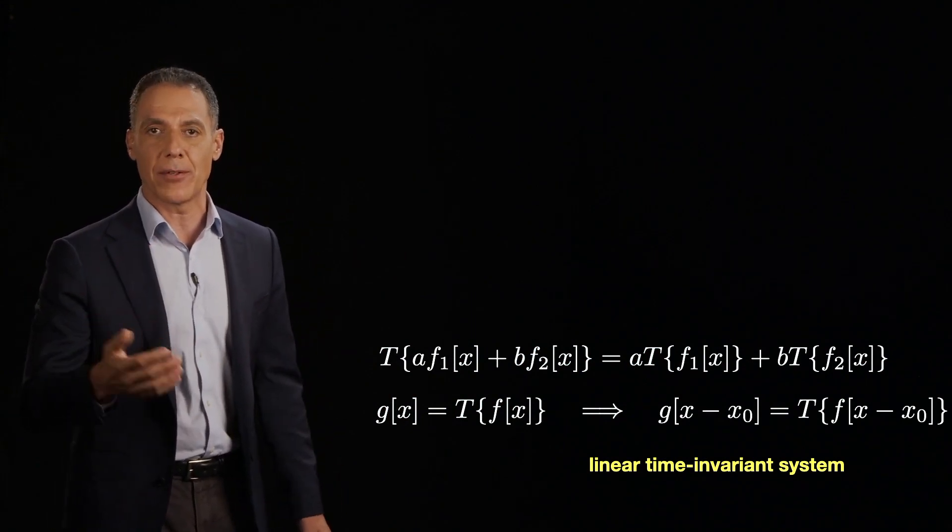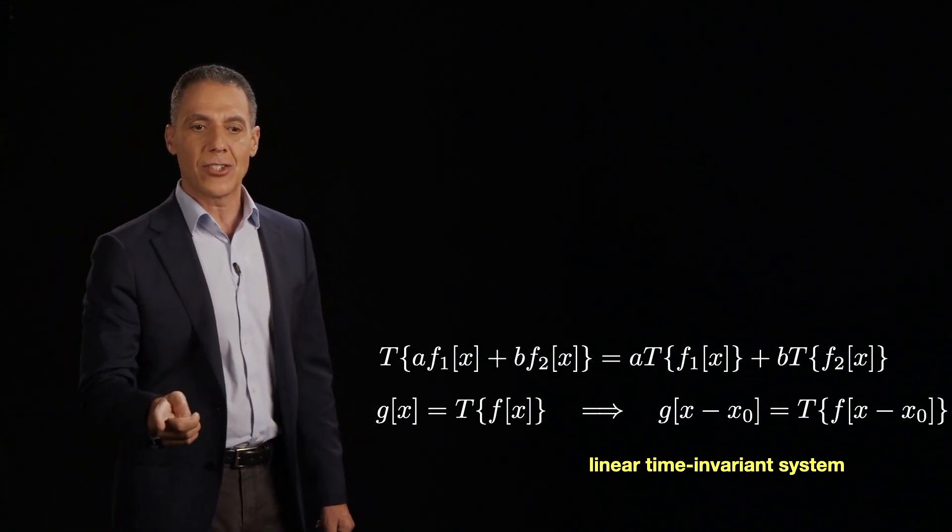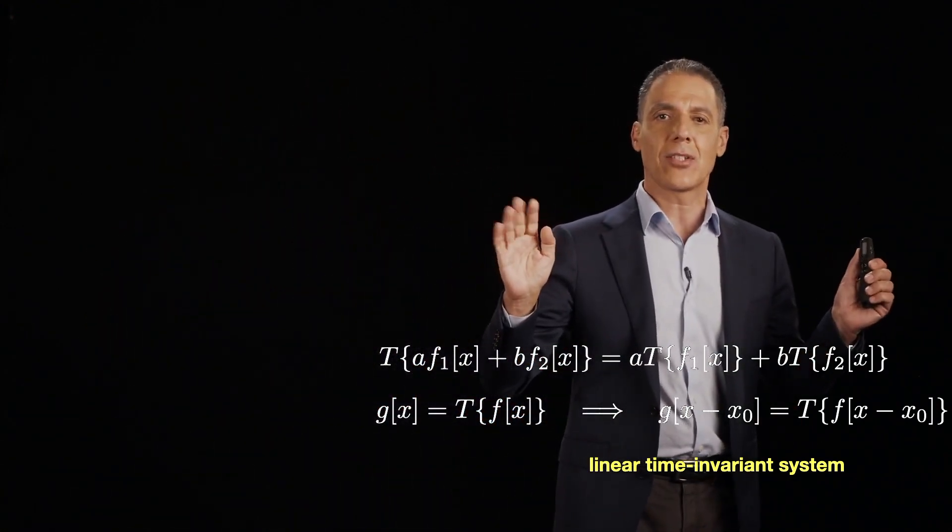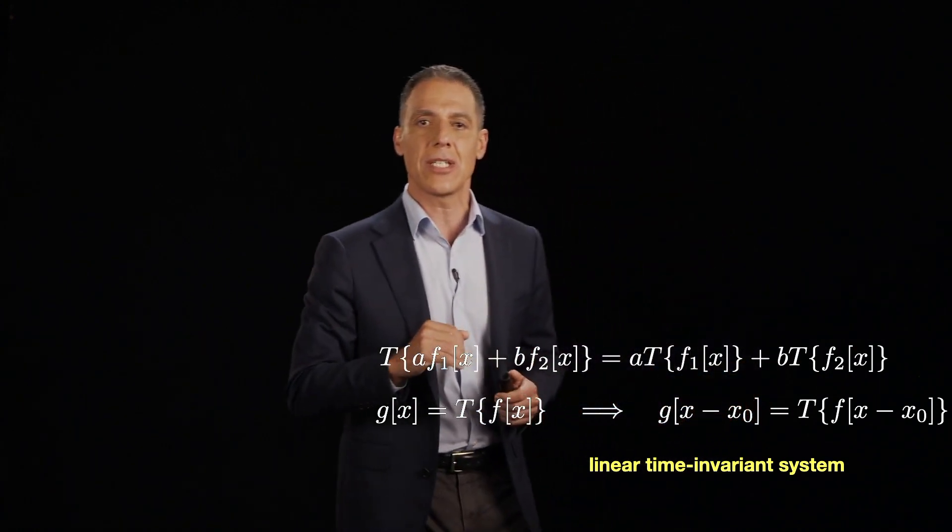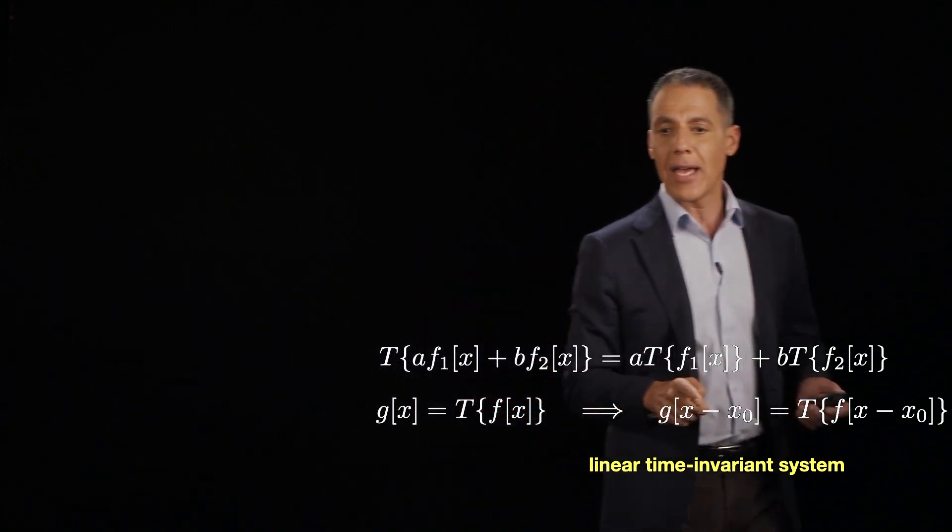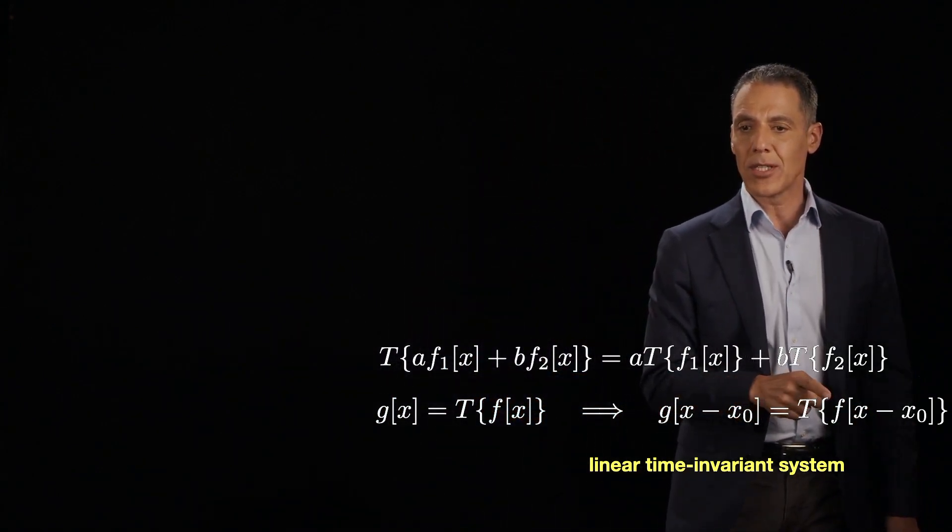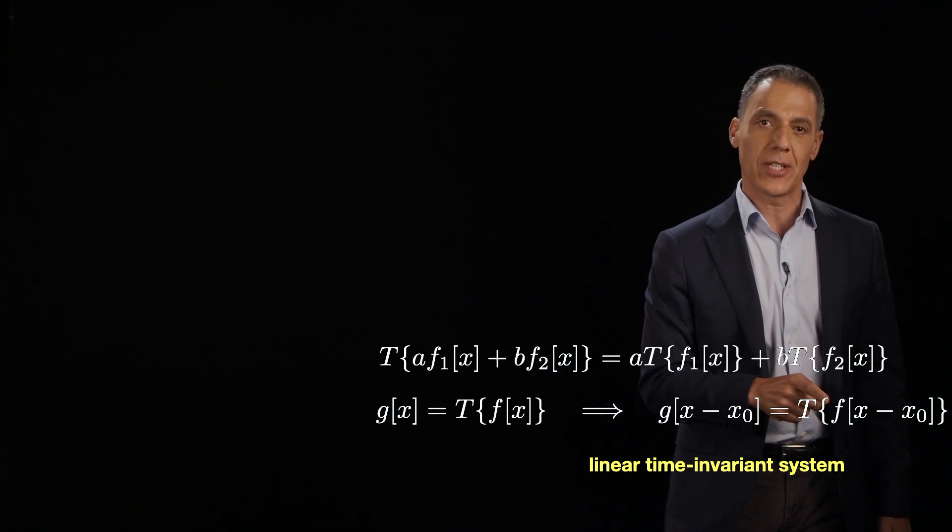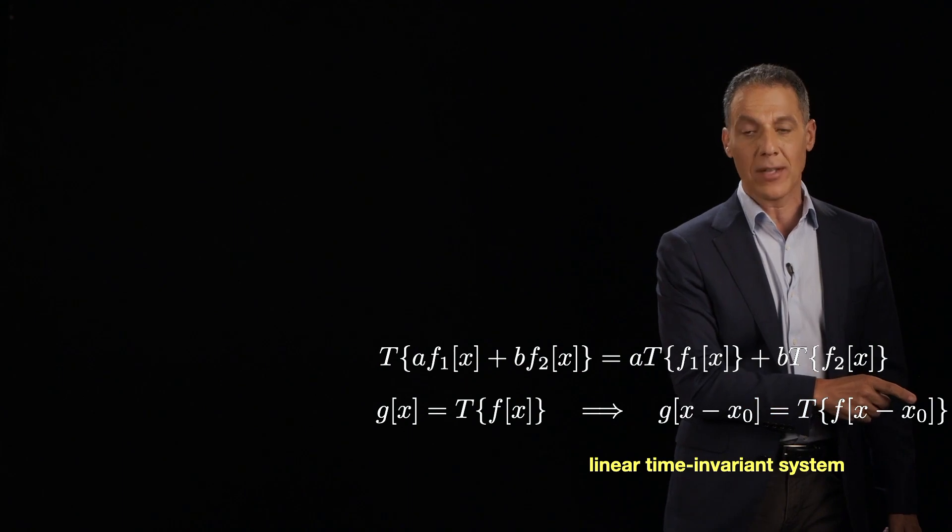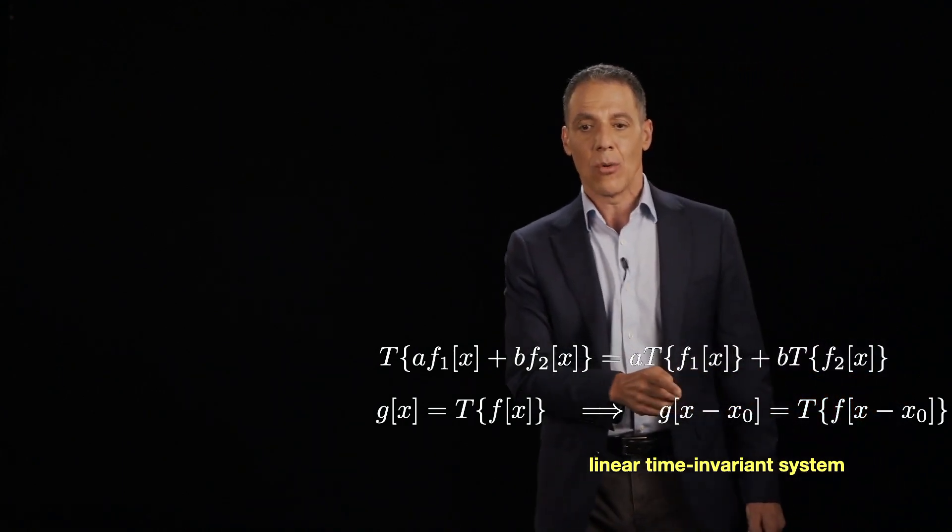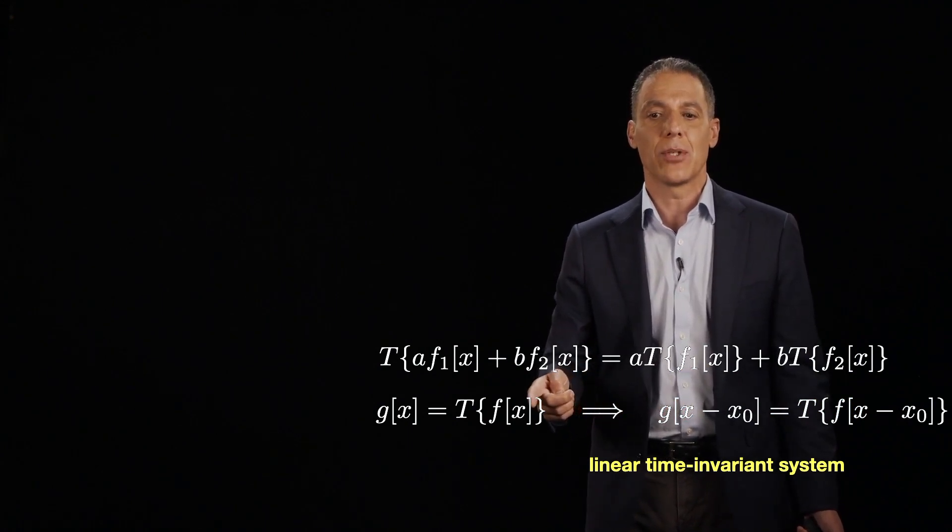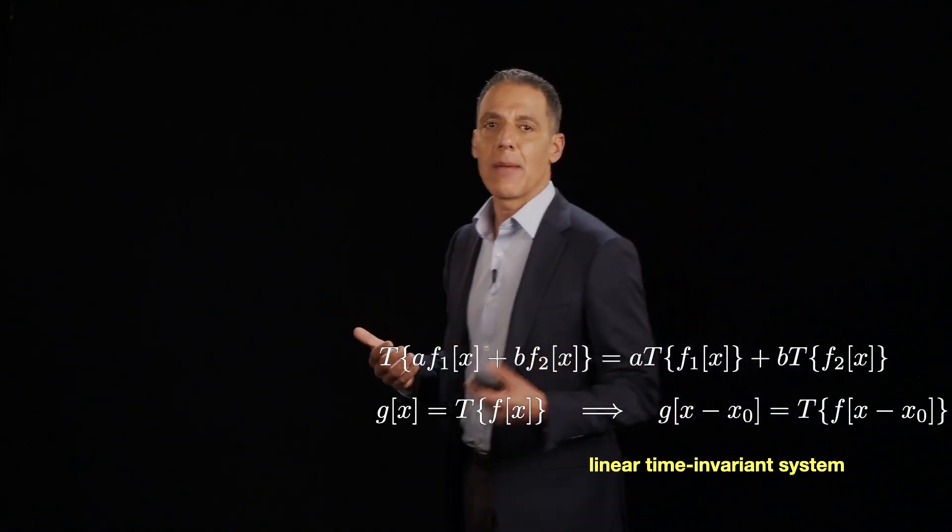Now let's deal with the time invariant part. So let g[x] equal T{f[x]}. So now I just have some signal f[x]. I shove it into the system T and out comes g[x] right there. Now, if I want to know what happens to the linear system when I put a time shifted or a phase shifted or a shifted version of the signal, so f[x - x_0], that's how much I'm shifting it by. Well, that's the same as shifting the output by the same amount as what you shifted the input by. So that's what time invariance means.